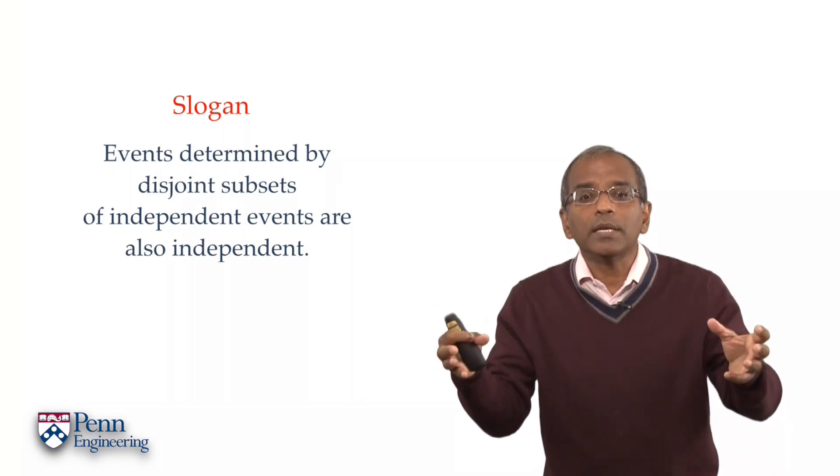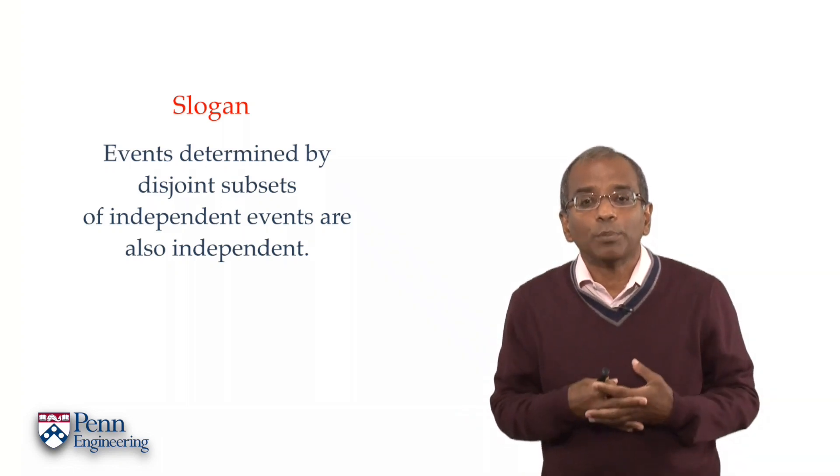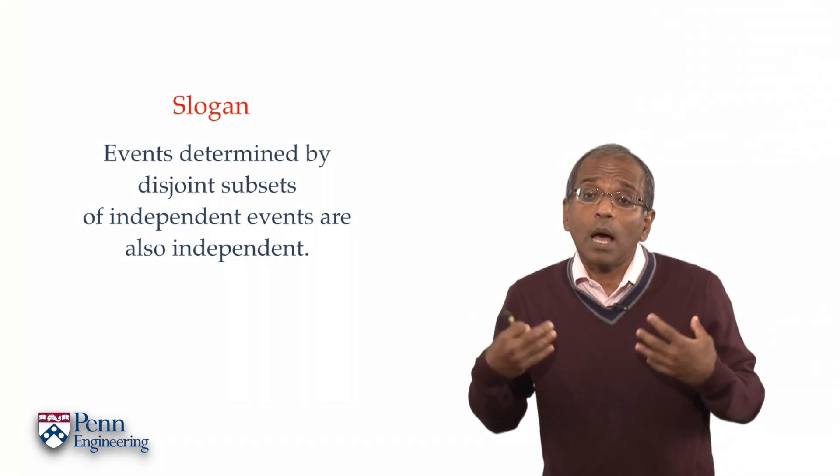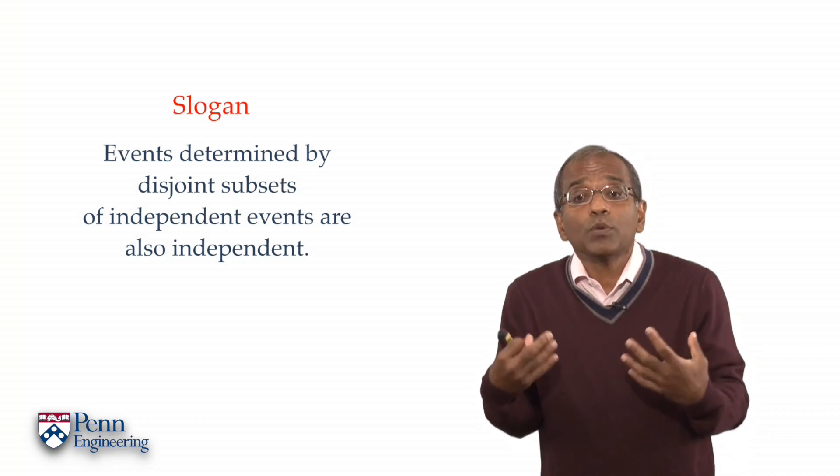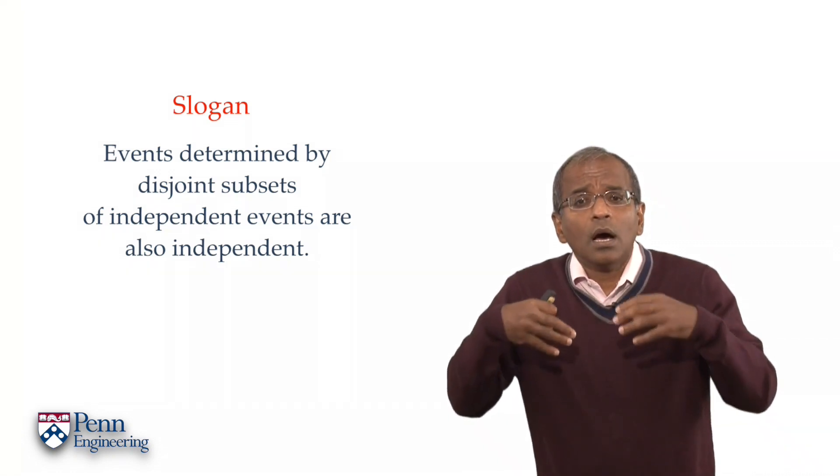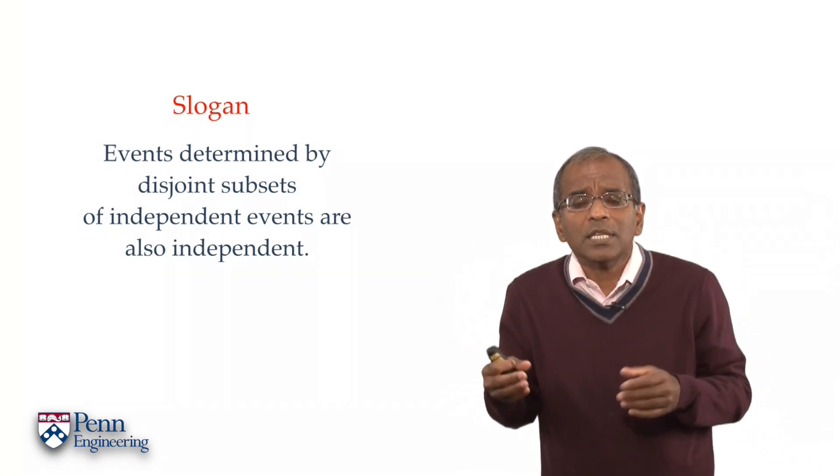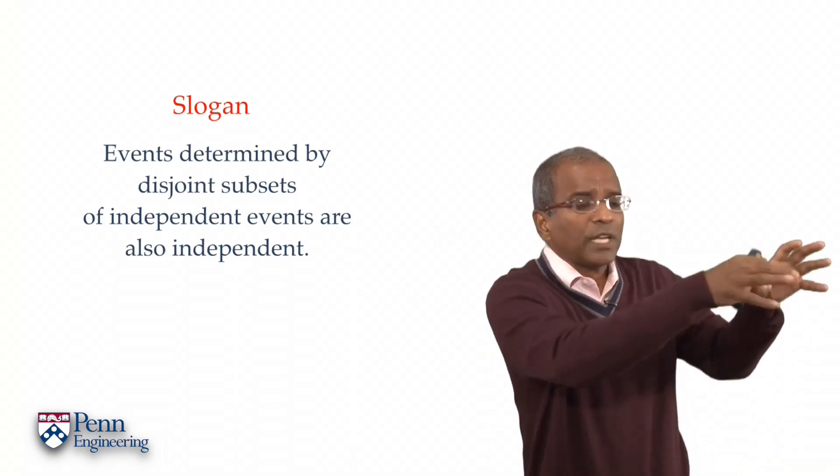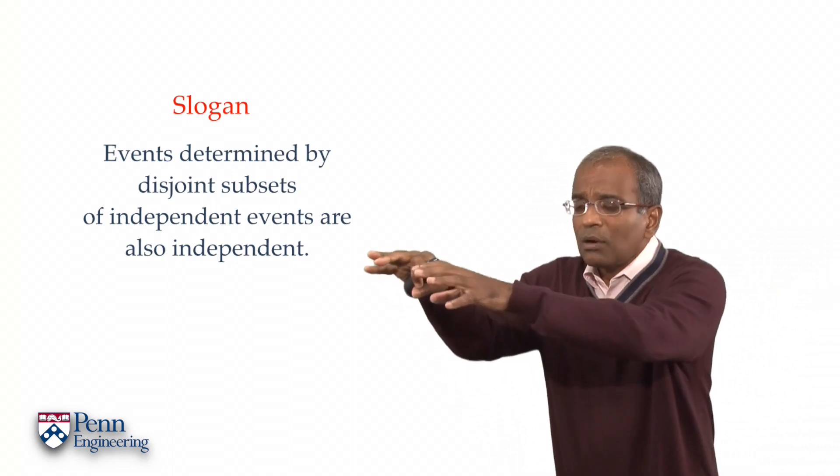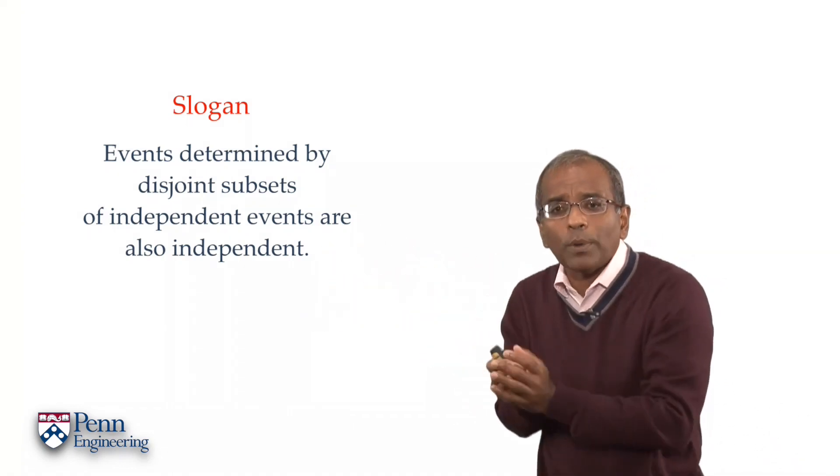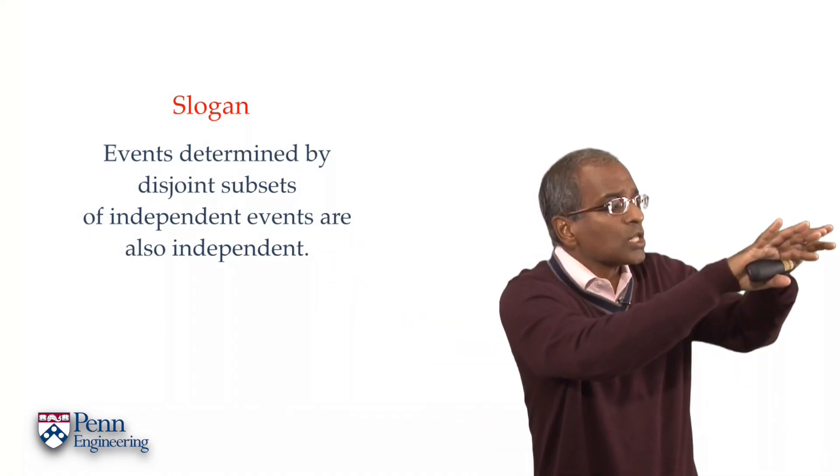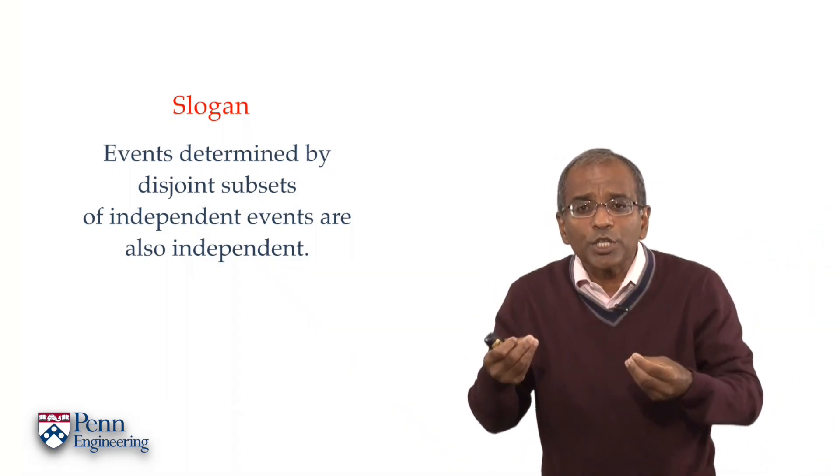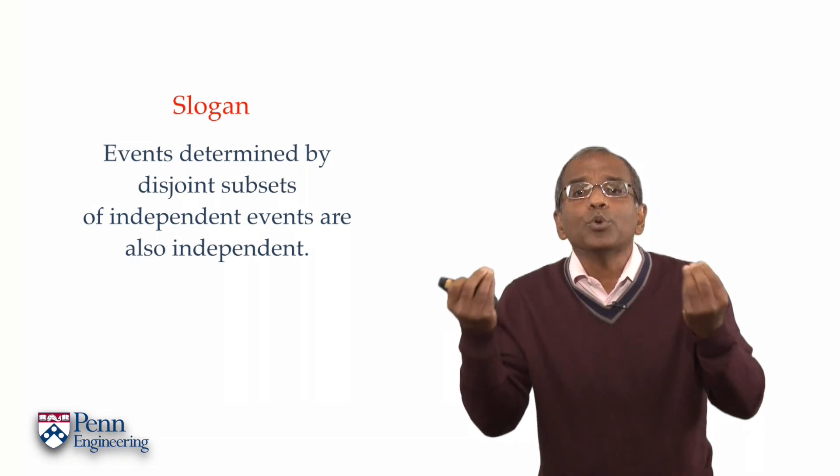The moment you have independence, it's preserved under such manipulations. This turns out to be a very powerful and general principle, and of course it's comforting that this is exactly what we would anticipate in our vague use of independence in ordinary language. If there are things out there which are independent of things out there, then results which depend upon these phenomena are independent of results which depend upon these phenomena. And our mathematical demonstration captures that intuition beautifully.